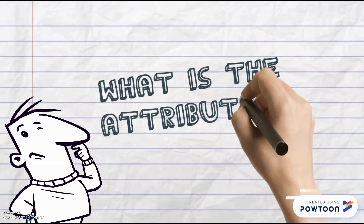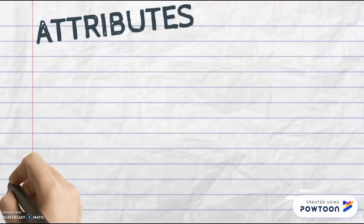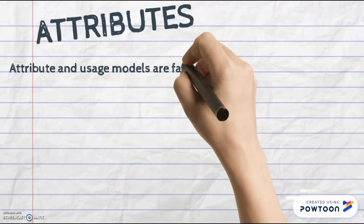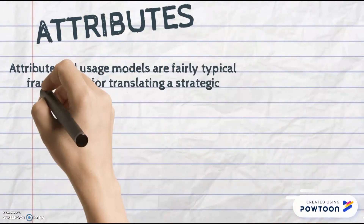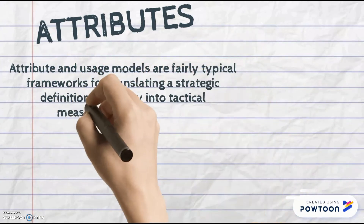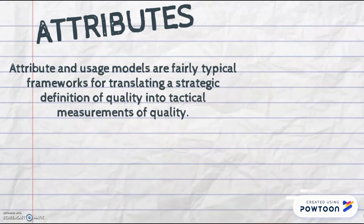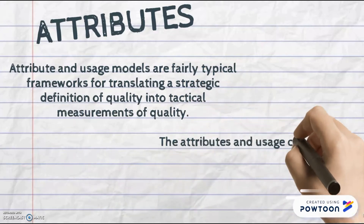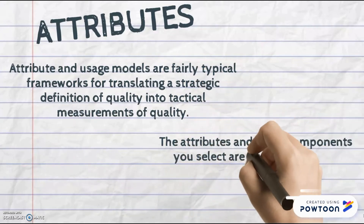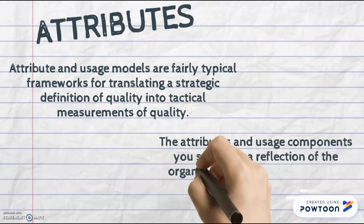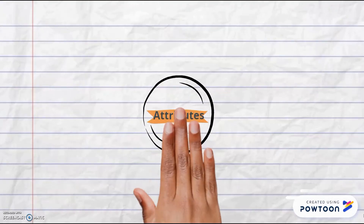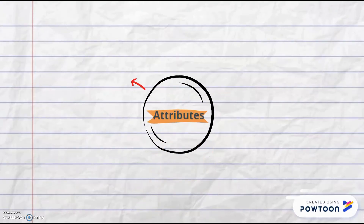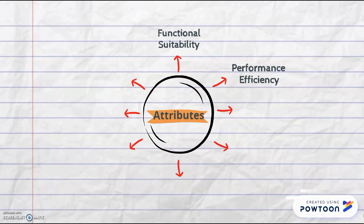What are the attributes? Attributes and usage models are fairly typical frameworks for translating a strategy definition into a tactical measurement of quality. Therefore, the attributes and usage components you select are a reflection of the organization's goals and mission. Now let us see some of the attributes that represent areas of concern with potential for application impact.